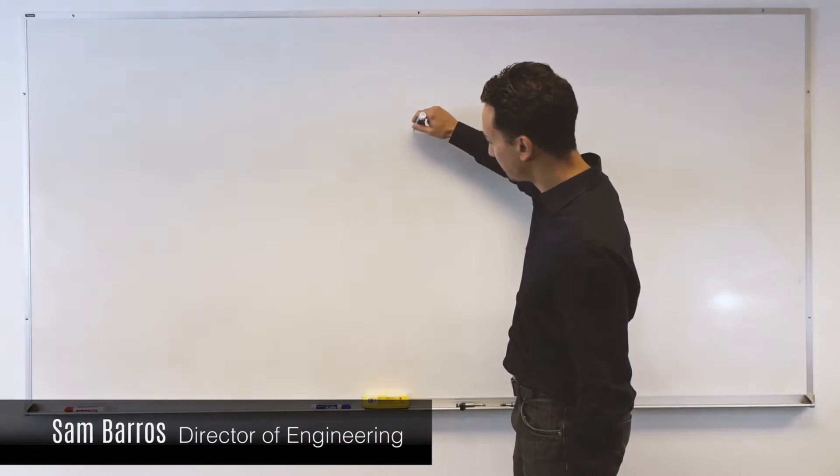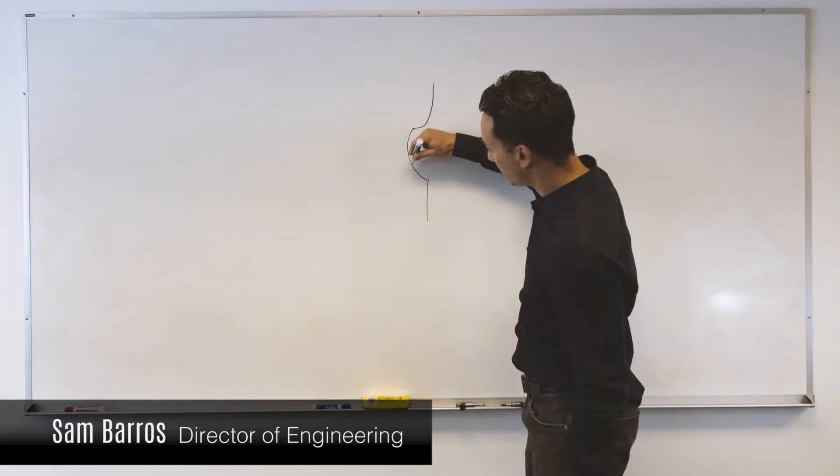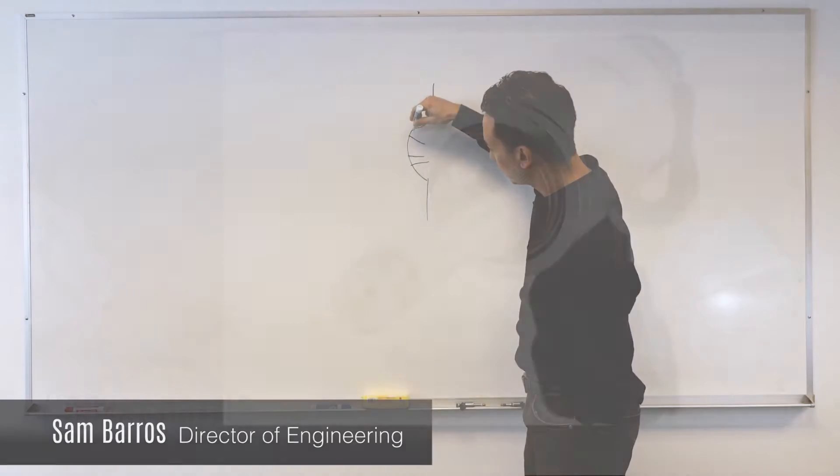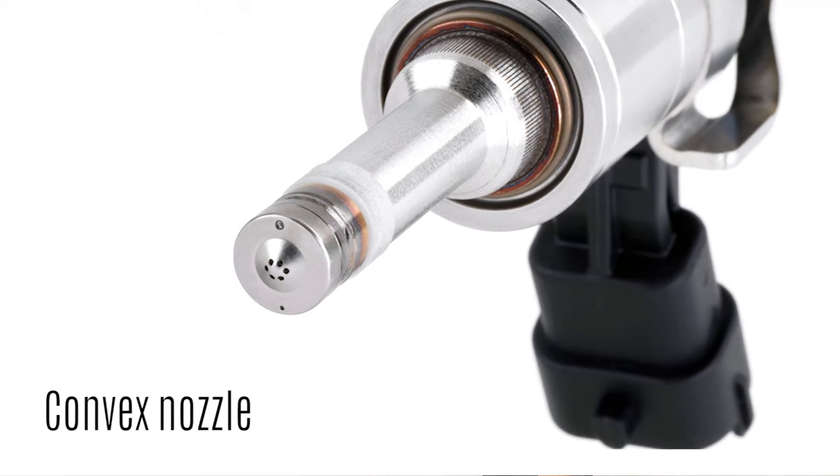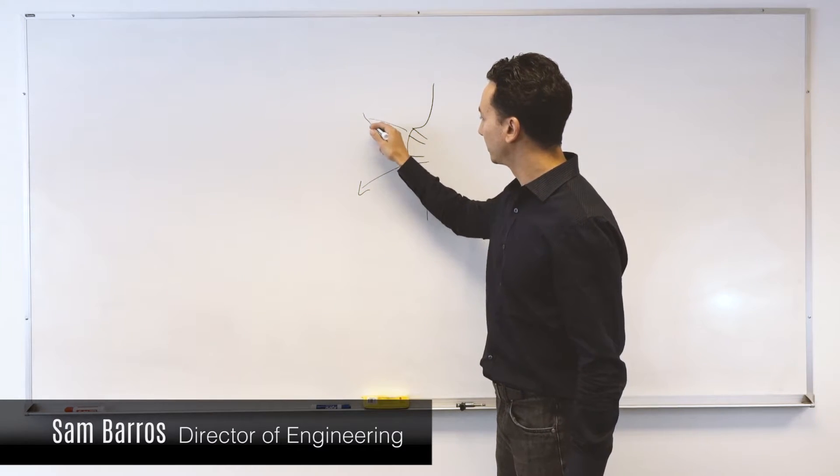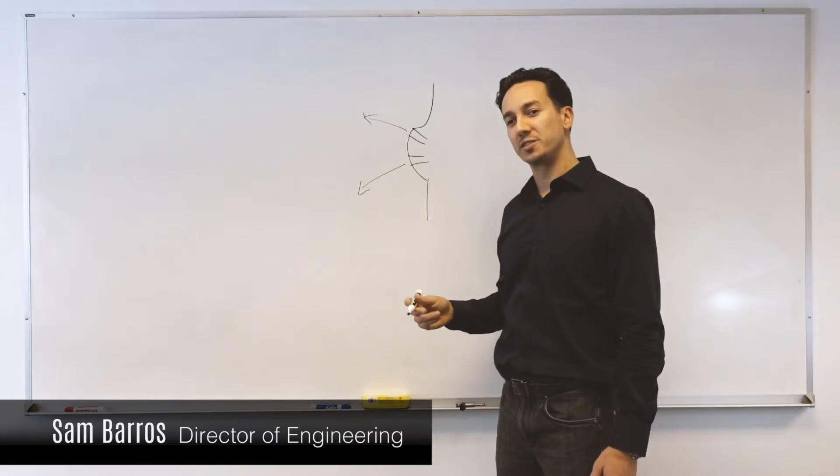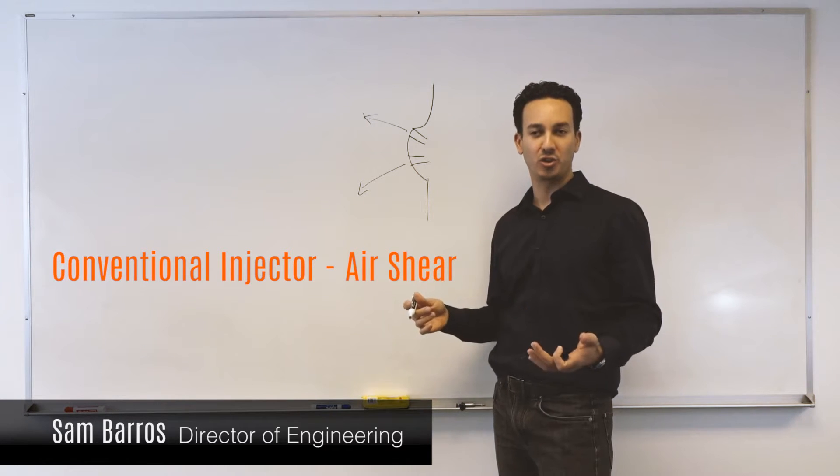the injectors consist of a nozzle with multiple passages drilled in it. These passages result in a multitude of jets that exit the nozzle and as they travel through the surrounding air, they shear and break down into smaller and smaller droplets.